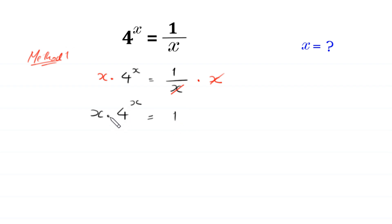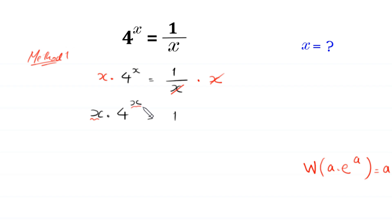Now we want to use the Lambert W function, that is: W of a times e to the power a is equal to a. To use the Lambert W function, we must have the same expression in both places. We have x here and x here, but we must have e in place of this 4.